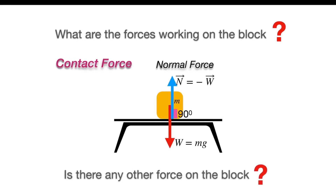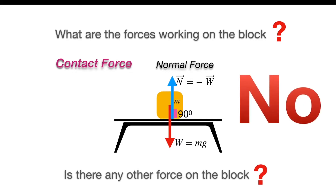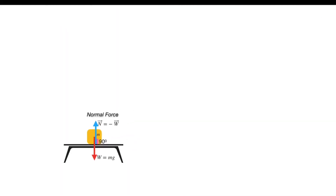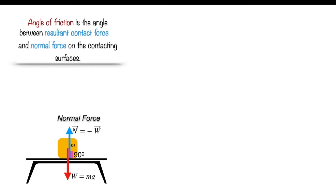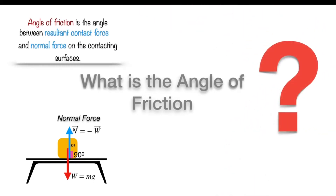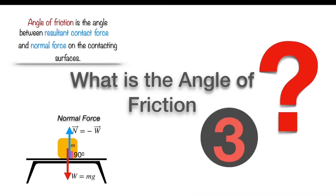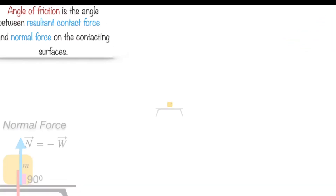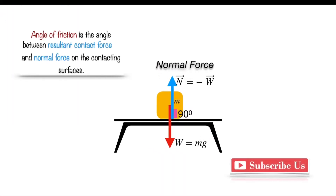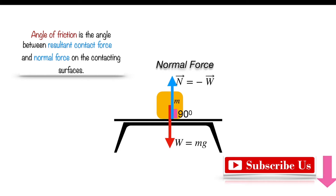Is there any other force working on the block? No. So now, applying the definition of angle of friction to this case — think about it. Those who said it is zero are absolutely right. Here there is only one contact force, which is the normal force, so the resultant contact force is the normal force itself, and the angle between the normal force and the normal is zero. So the angle of friction is zero.